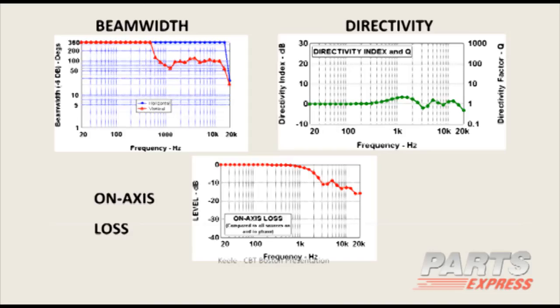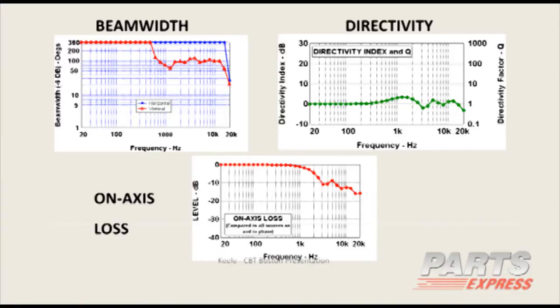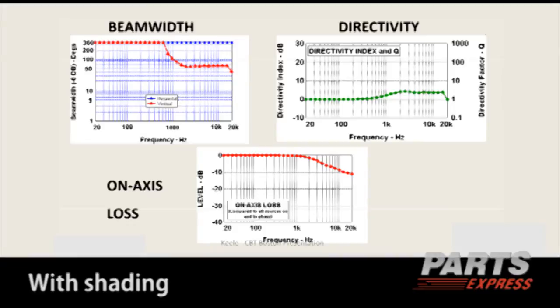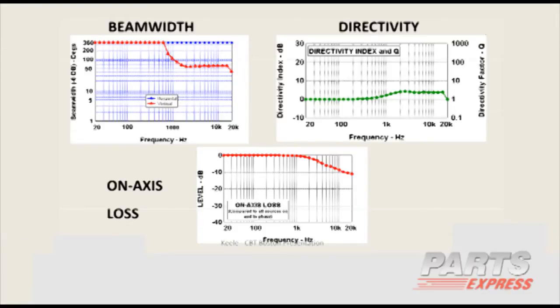The included angle is the beam width angle. Ideally you'd have a beam width that doesn't change with frequency, but it does. If you simply take these drivers without shading, this shows the beam width and directivity — the beam width is pretty flat but has some anomalies. When you switch over to the shading, it gets extremely constant and well-behaved.